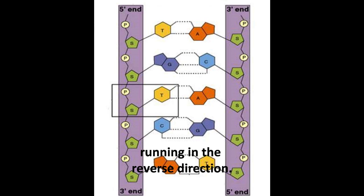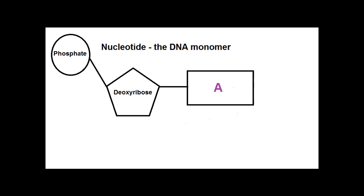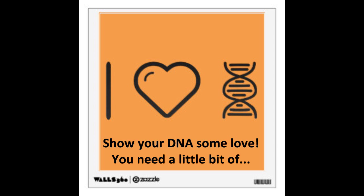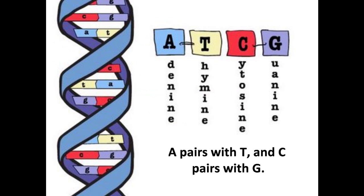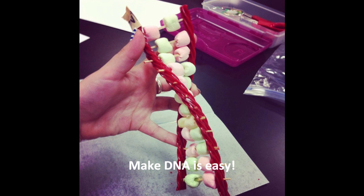You need a little bit of G-T-C-A. Just a little bit of G-T-C-A. Deoxyribose oxide with a phosphate above. Show your DNA somewhat. You need a little bit of G-T-C-A. Just a little bit of G-T-C-A. A pairs with T and C pairs with G. Making DNA is easy.